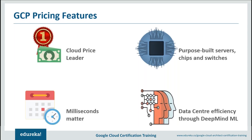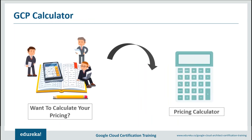GCP provides you with a calculator. All this while we've been discussing how GCP pricing is good and how it lowers your costs, but you still need to track the services you are using and how much you're paying for them. GCP has a GCP calculator which lets you calculate all the money you might invest in your services, so you can track all investments for the future. In the demo part, I'll discuss the calculator in more depth.